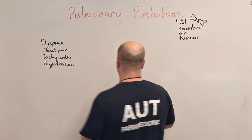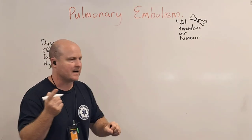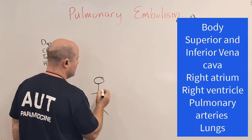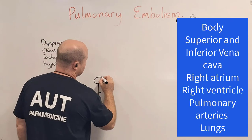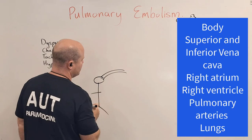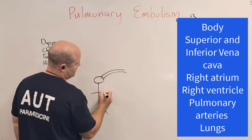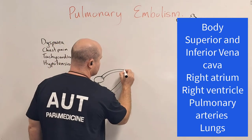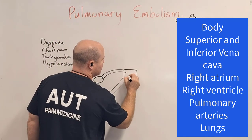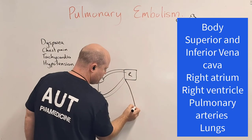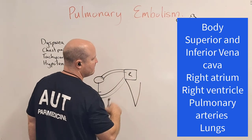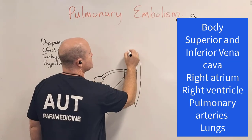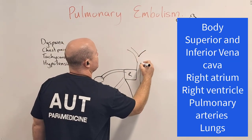So how does it happen? Let's get back into our heart. Here is our body and the blood from above the heart comes in by the superior vena cava. Blood from below the heart comes into the heart by the inferior vena cava, and it comes to the right side of the heart, then into the right ventricle and then up the pulmonary arteries, which take the blood to the lungs.